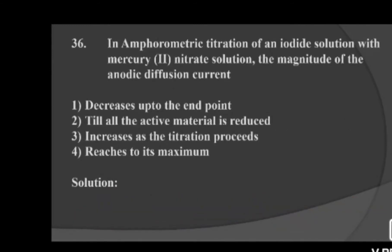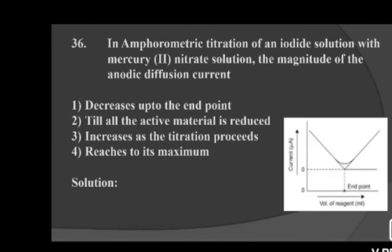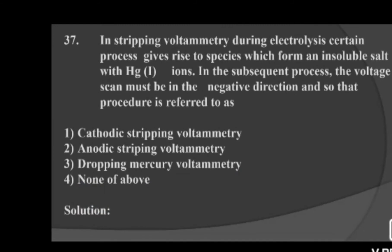Next question: in amperometric titration of an iodide solution with mercury(II) nitrate solution, the magnitude of anodic diffusion current — option 1: decreases up to the end point, option 2: till all the active material is reduced, option 3: increases as the titration proceeds, option 4: reaches its maximum. Since iodide solution and mercury nitrate solution are both reducing, observing the graph shows the anodic diffusion current decreases up to the end point — option 1 is correct.